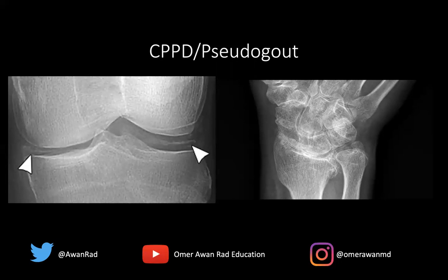If it occurs in someone younger than 50 years old — like someone who's 40 or 30 — then you want to consider a secondary cause for the pseudogout or CPPD arthropathy, something like hemochromatosis or hyperparathyroidism. The primary form is idiopathic, but the secondary form is usually a result of some other systemic disease such as hyperparathyroidism, hemochromatosis, or even Wilson's disease.